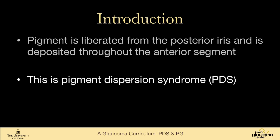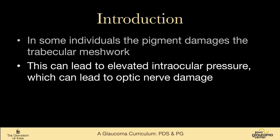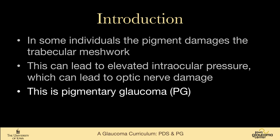You look in and see pigment on the cornea and in the angle behind the iris — that's pigment dispersion syndrome. In some individuals, the pigment damages the trabecular meshwork, which can lead to elevated intraocular pressure, and some of those people will go on to have optic nerve damage. That is pigmentary glaucoma. Not everyone who gets pigment dispersion syndrome will progress to pigmentary glaucoma, but somewhere between a quarter and a half will.